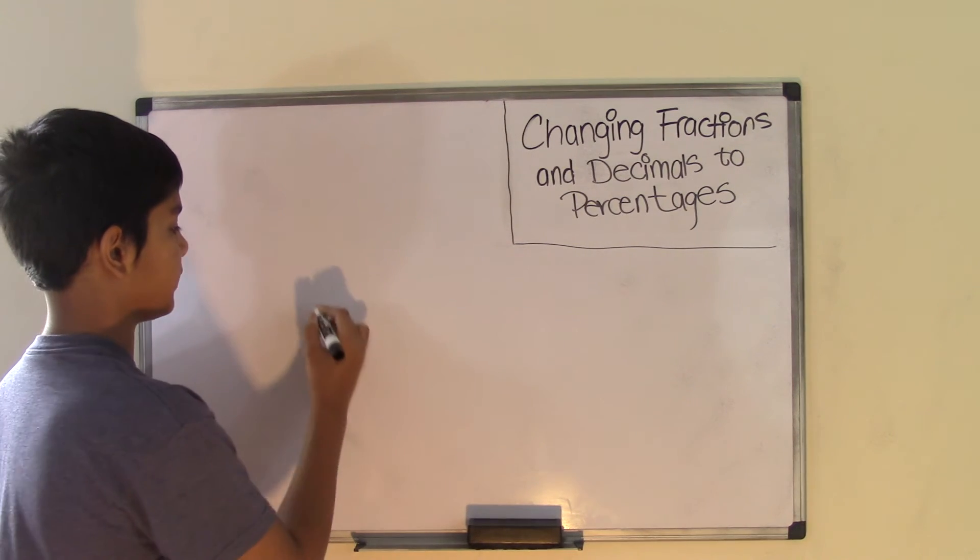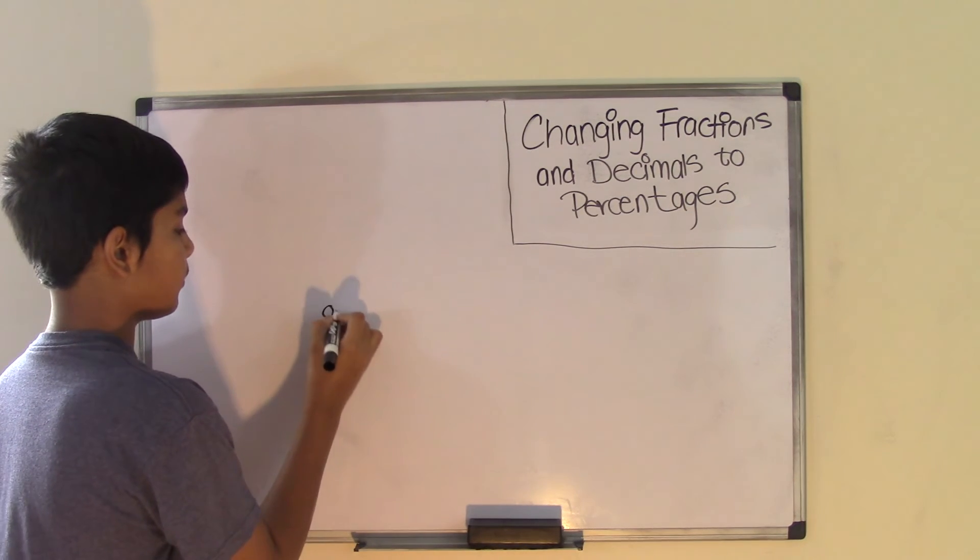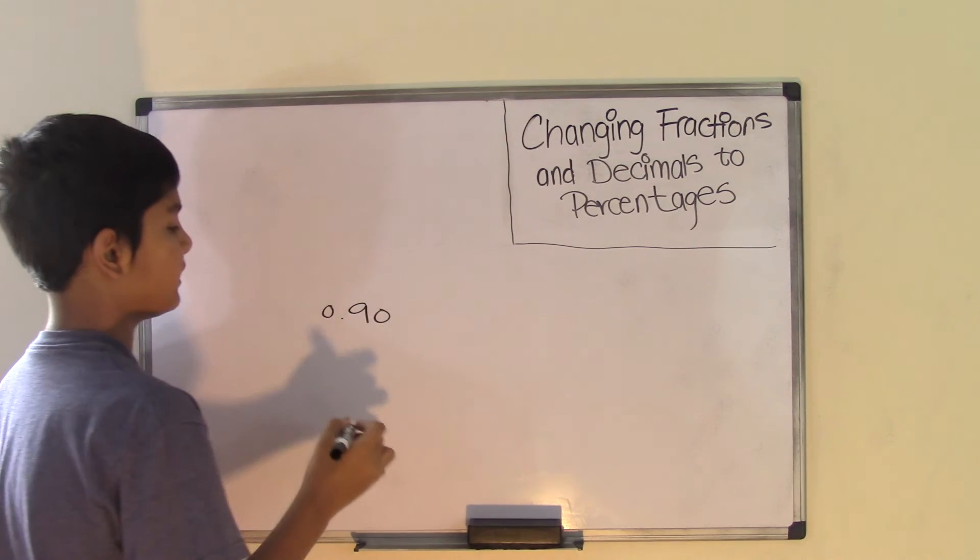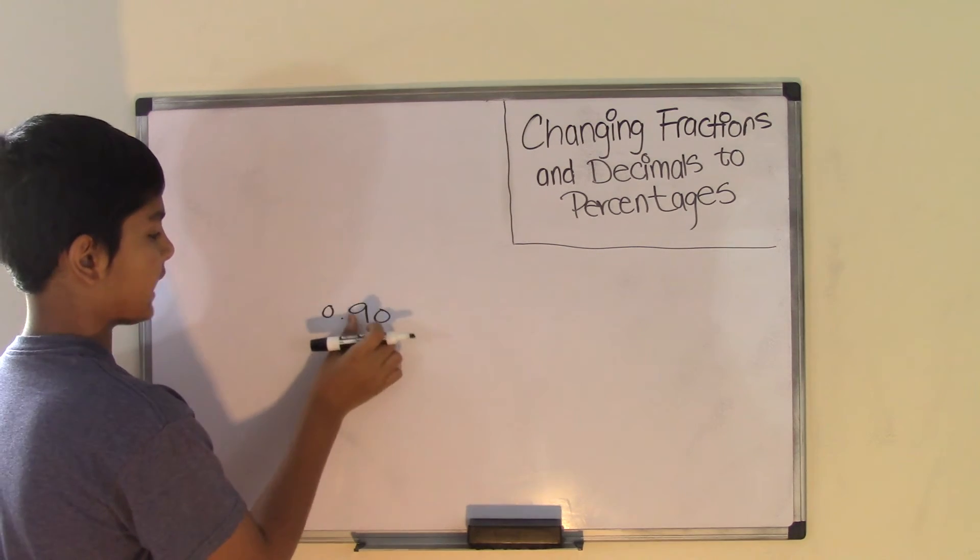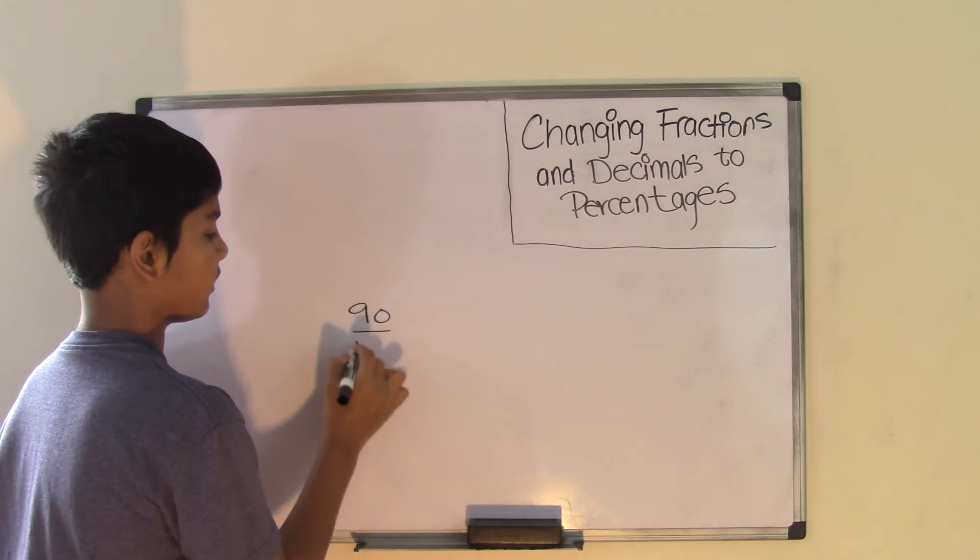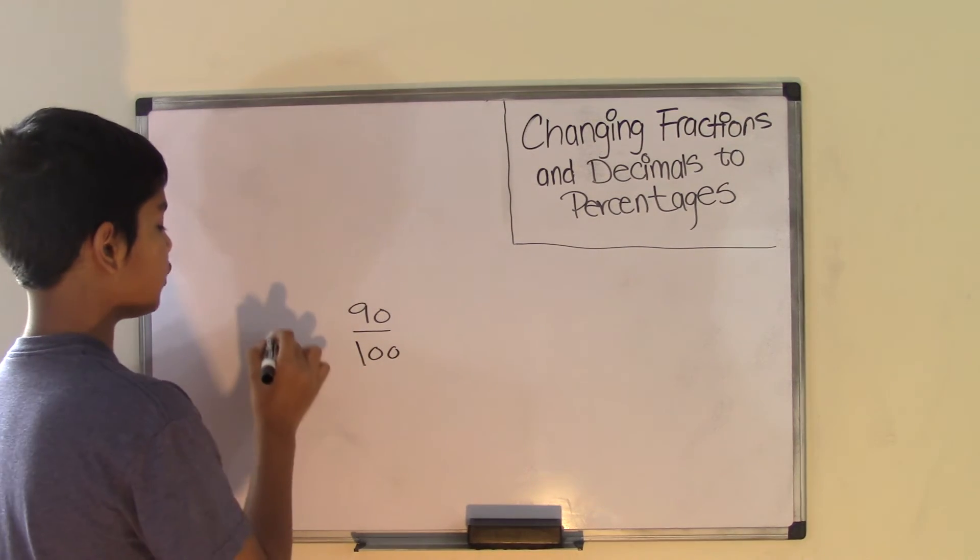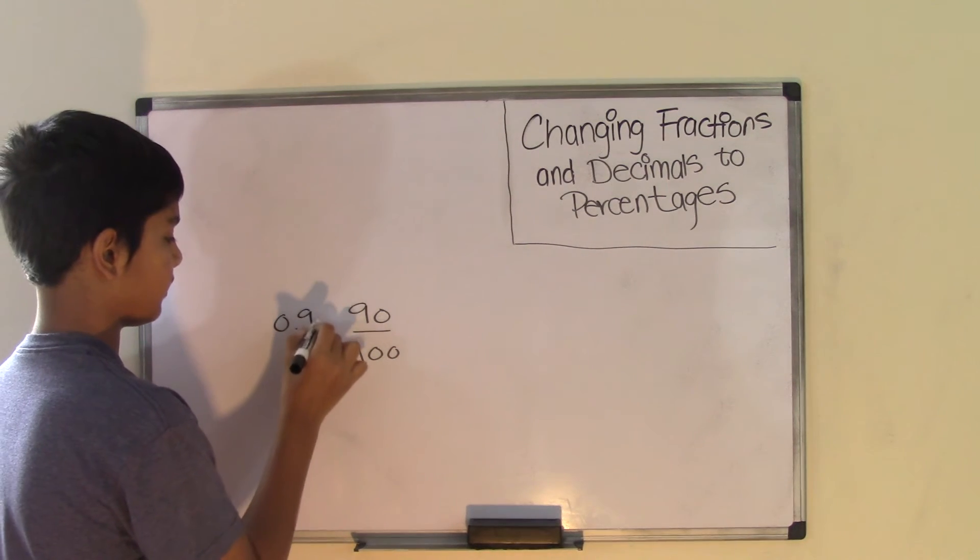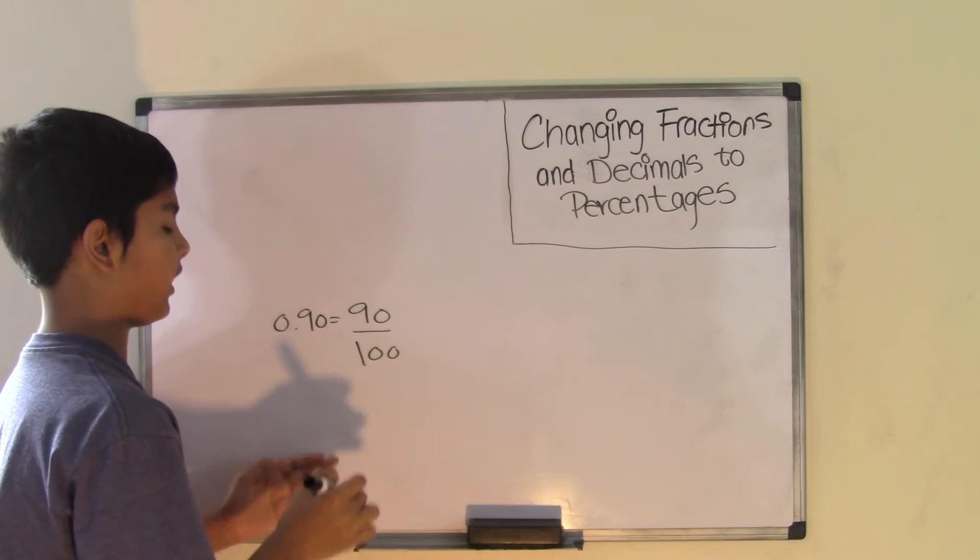So like for example, if I have the decimal number 0.90, then 0.90 is actually 90 out of 100. So if 0.90 is equal to 90 out of 100, then you know that anything out of 100 is the percent.